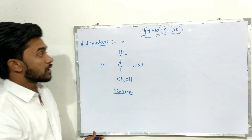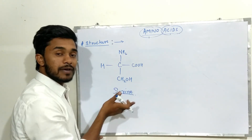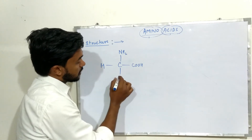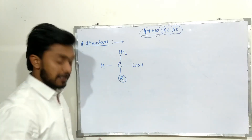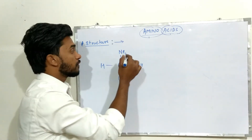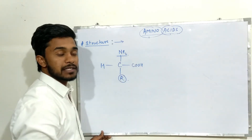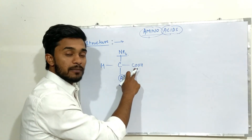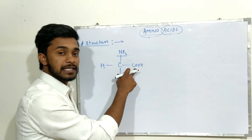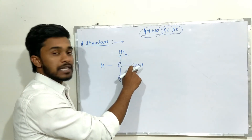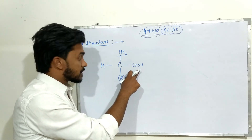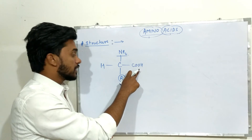If the functional group is replaced by CH2OH, then the amino acid is named serine. The name and structure of an amino acid depends upon this functional group. If there are more amino groups, the amino acid is basic in nature; if there are more carboxylic acid groups, it is acidic; and if both are equal, the amino acid is neutral in nature.